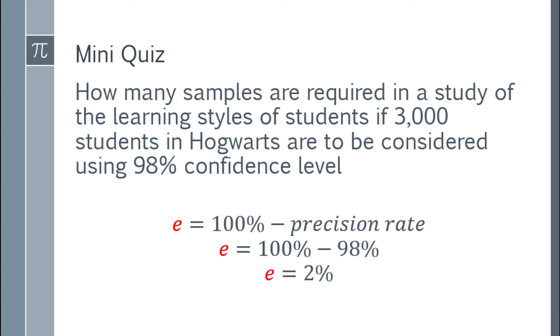You'll notice in the question, we have the 98% confidence level, so the margin of error wasn't given directly. So you have to transform it. Margin of error is equal to 100% minus the precision rate or confidence level. So 100% minus 98%, that will be 2%. So margin of error here will be 2%. If we're going to convert it to decimal, you just divide it by 100 and remove the percent sign, so that will be 0.02.